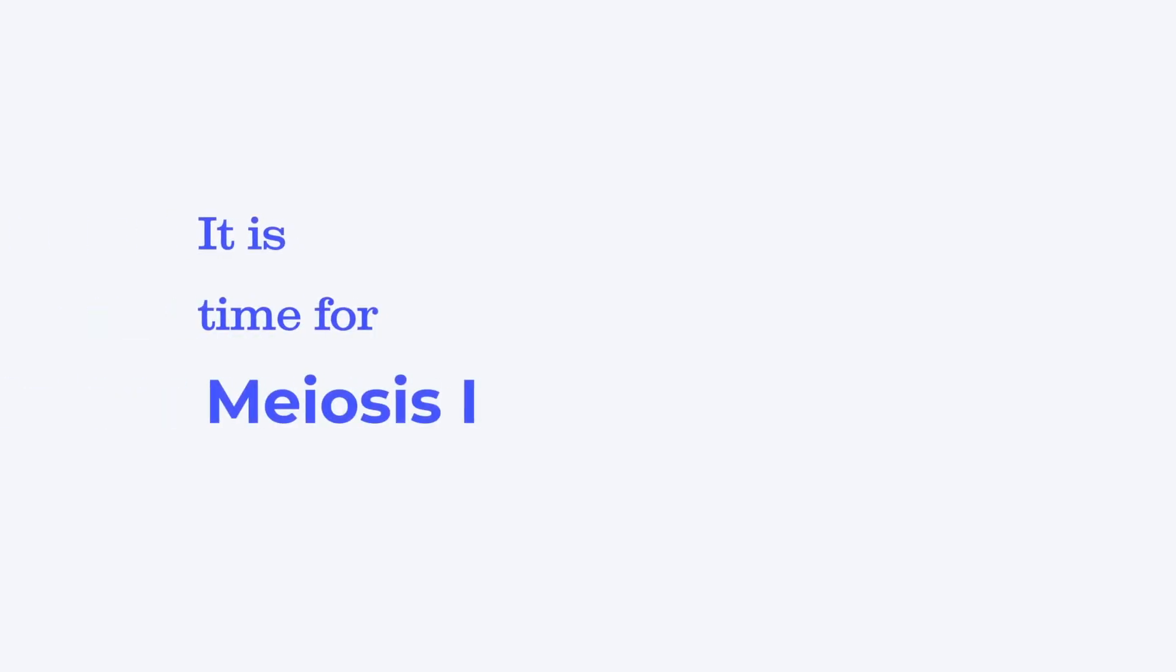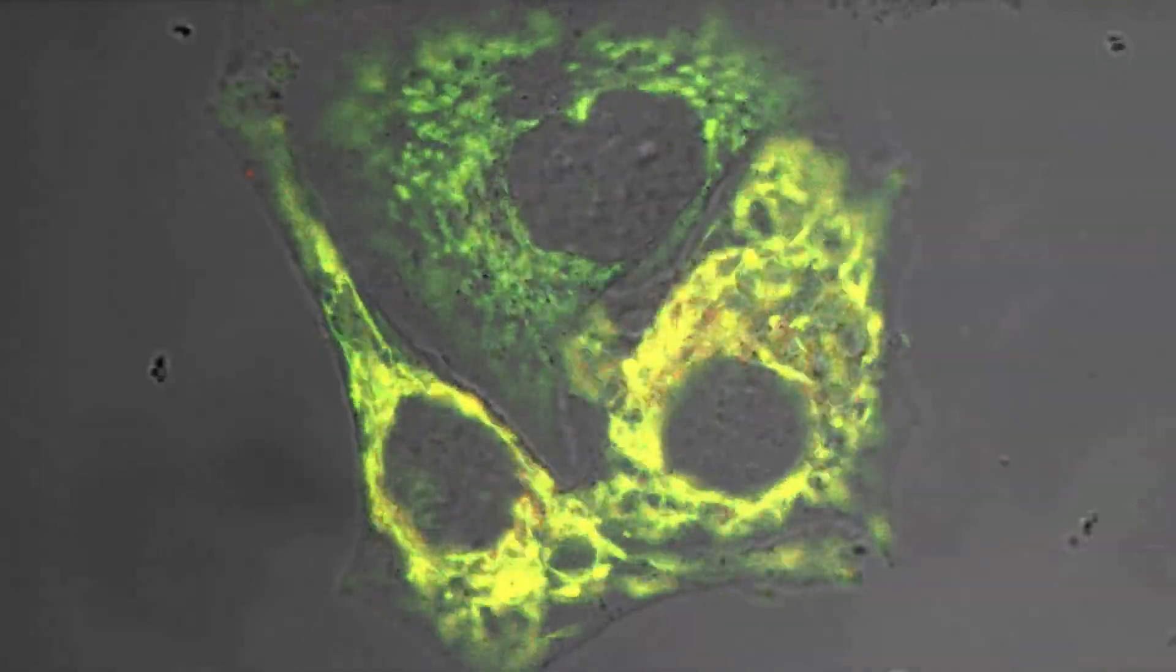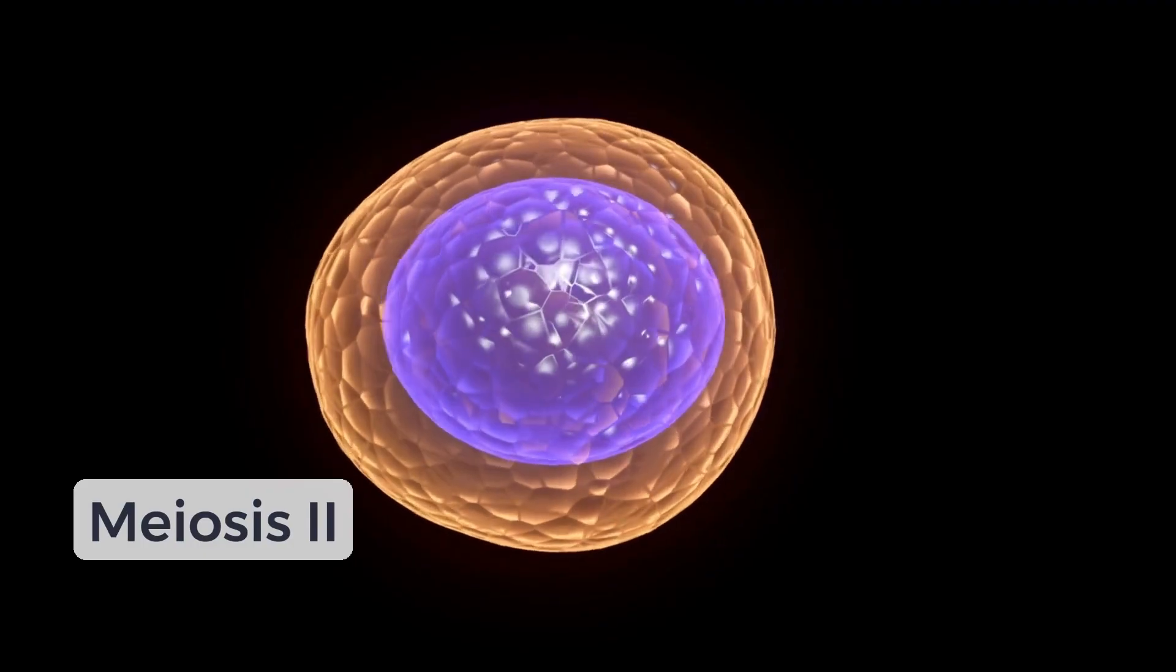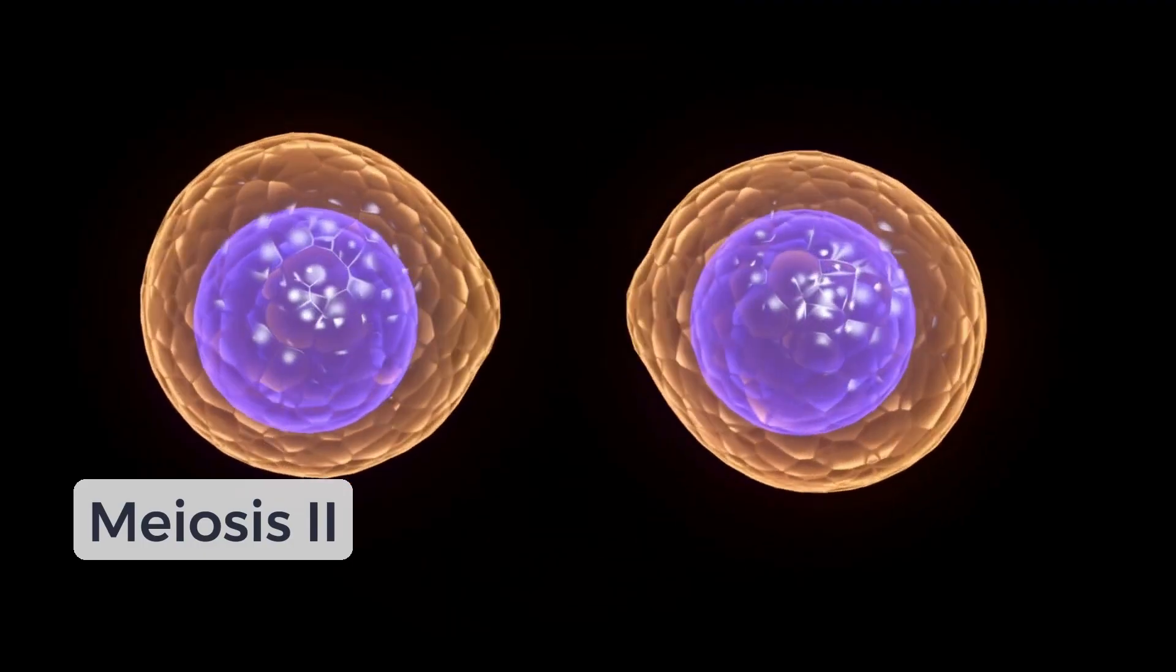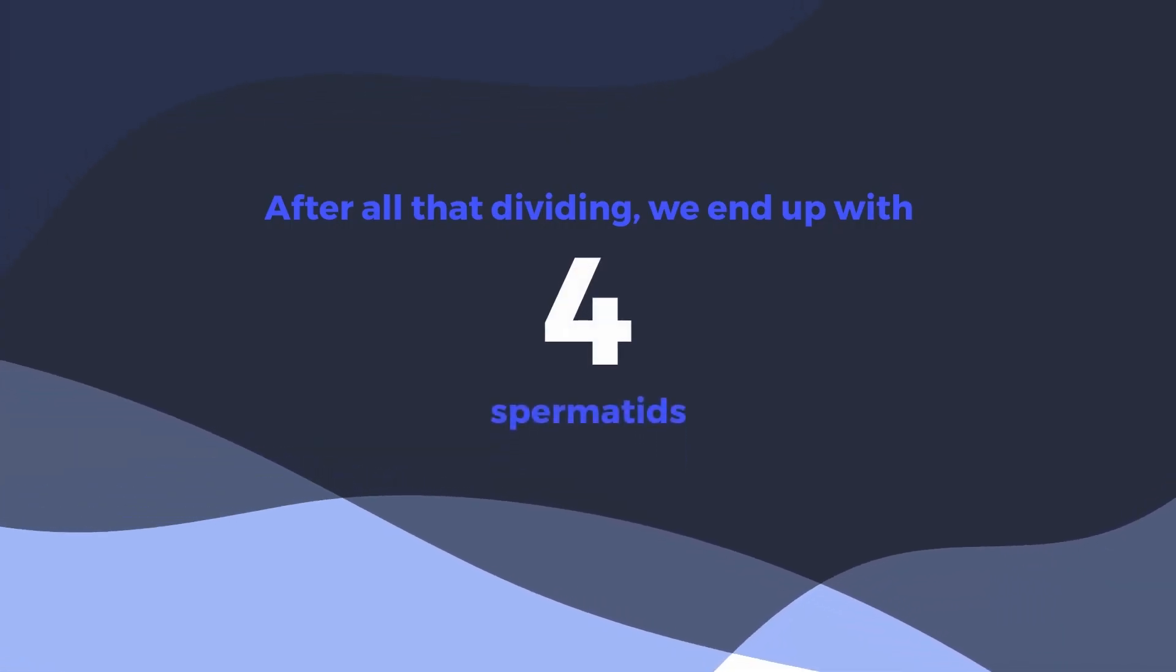It is time for meiosis one. The cell lines up its chromosomes and gets ready to divide, but we're not done yet. Each of these now undergoes meiosis two for one more division. After all that dividing, we end up with four spermatids.